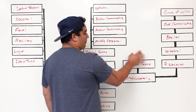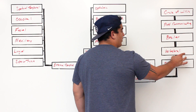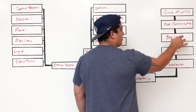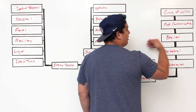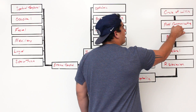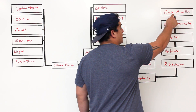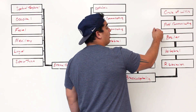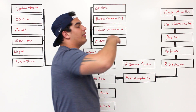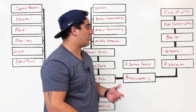The right and left subclavians give off the vertebral arteries, which go into the basilar artery. The basilar artery gives off many branches and feeds into the posterior communicating arteries, which are part of the Circle of Willis. From there, blood can go to the posterior cerebral artery, middle cerebral artery, anterior cerebral artery, and many other branches.